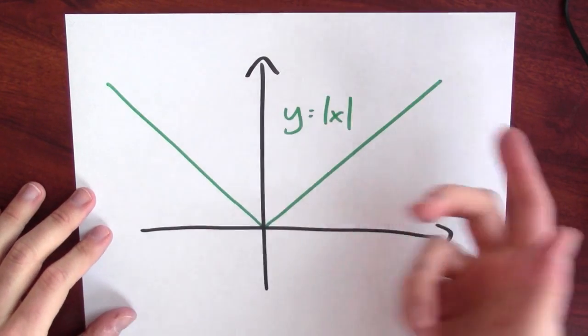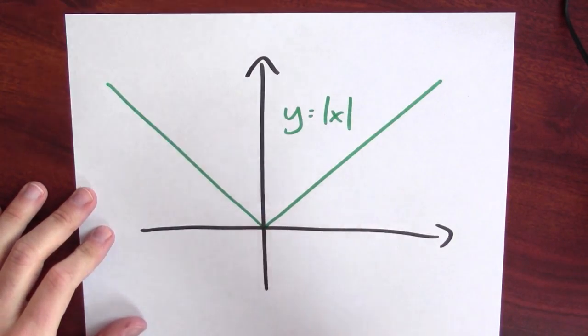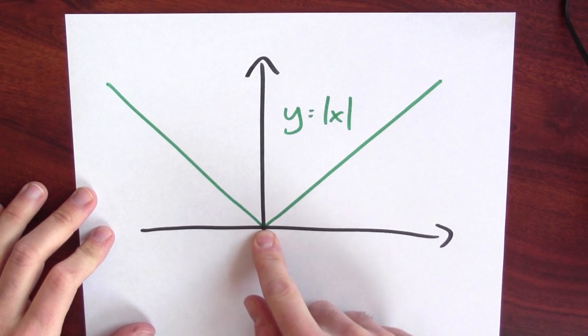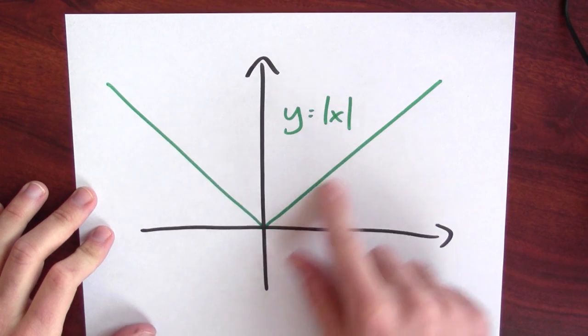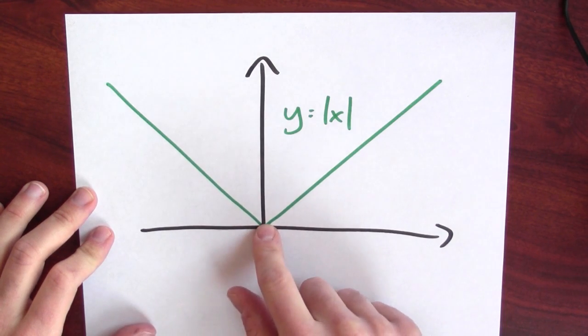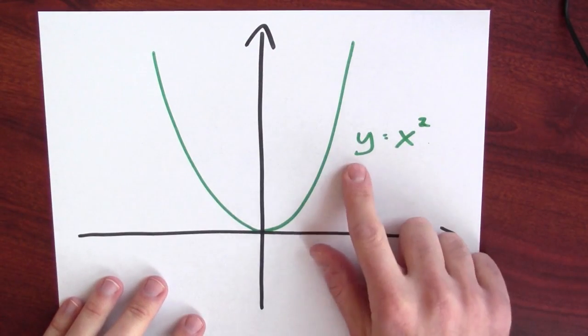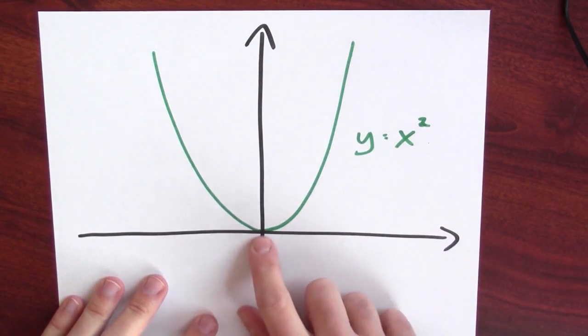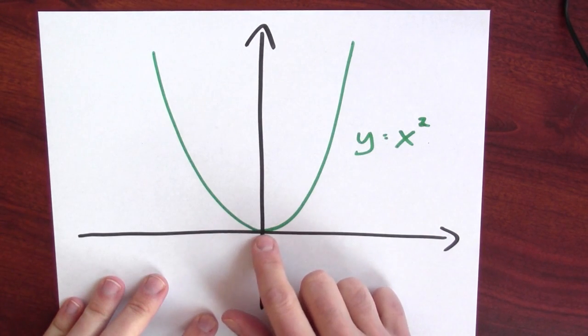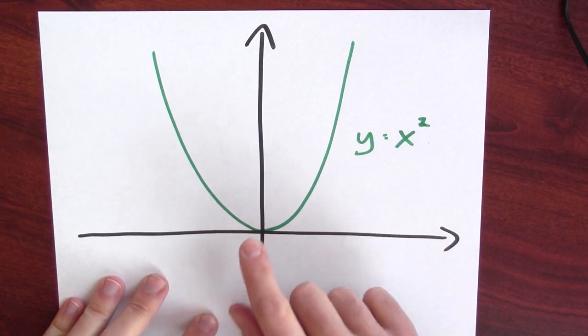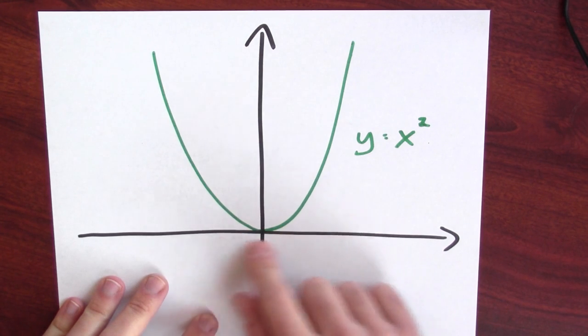Here's the graph of the absolute value function. There's a local and a global minimum at the point 0. The derivative of this function isn't defined at that point. Here's another example: the graph of y equals x squared. This function also has a local and a global minimum at the point 0. Here, the derivative is defined, but the derivative is equal to 0 at this point.